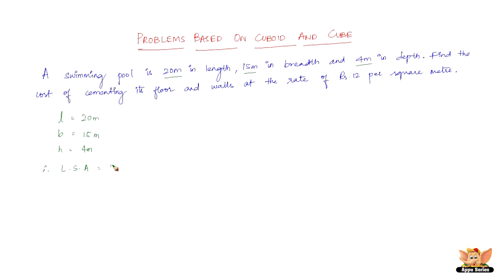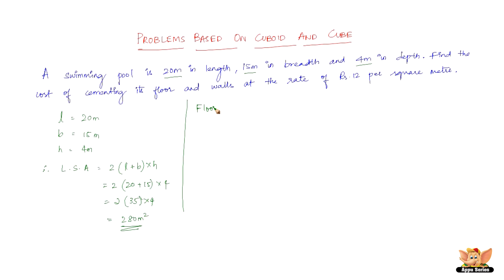The lateral surface area is given by the formula: 2 × (length + breadth) × height = 2 × (20 + 15) × 4 = 2 × 35 × 4 = 280 square meters. That is the area of the 4 walls. The floor area is length × breadth = 20 × 15 = 300 square meters.